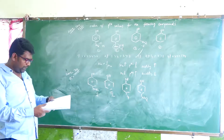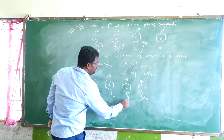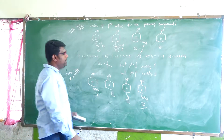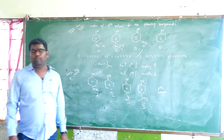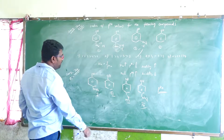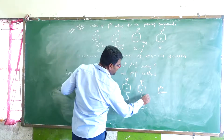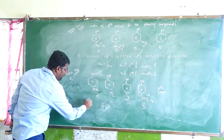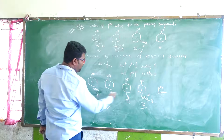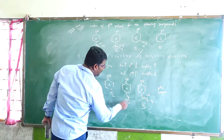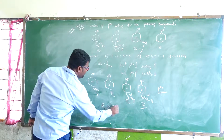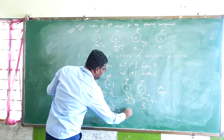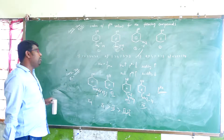The question asks to find the correct order of PKA values. First, arrange whether it is increasing or decreasing order of PKA values. Which one has more PKA value? Among the four, the compound with the -I effect dominated has more acidity. So the fourth one is most acidic, meaning it has the least PKA value. Among the remaining three, the compound with both -I and +M effects is next in acidity. The least acidic ones are those with electron-releasing groups — the first one is the least acidic, and the second is next.